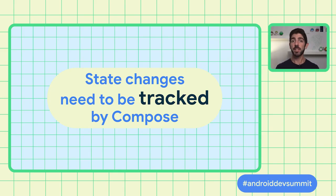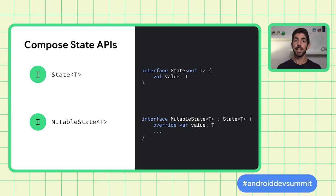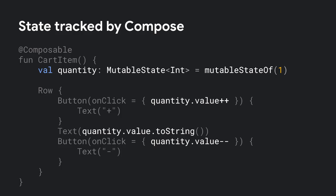Compose has a special state tracking system in place that schedules recompositions for any composables that read a particular state. This allows Compose to be granular and just recompose those composable functions that need to change, not the whole UI. This is achieved by tracking not only writes — that is, state changes — but also reads to the state.